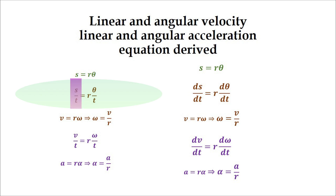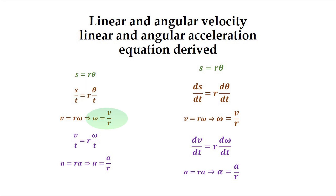Here on the left-hand side, s by t is linear velocity, while on the right-hand side we get r into theta by t, where theta by t is denoted by omega and is known as angular velocity. Linear velocity is equal to r times angular velocity. Further solving, we will get angular velocity equals linear velocity divided by r.